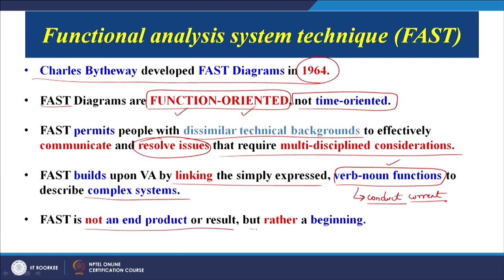FAST is not an end product or result, but rather a beginning. First we put all the information together — for each and every part we must identify the basic function of that part or sub-assembly and write a verb-noun definition for it. Once that is done, we sit with a multifunctional team to identify areas of improvement: which parts can be eliminated, which parts are not adding any value to the overall product function, and how these can be combined or eliminated. This is the basic background of the FAST diagram.